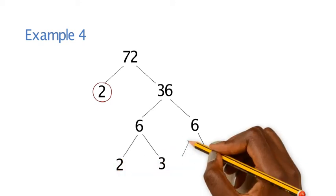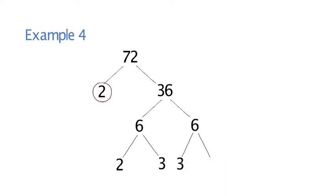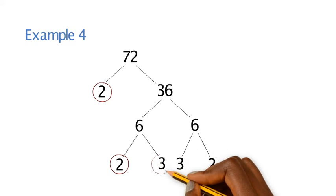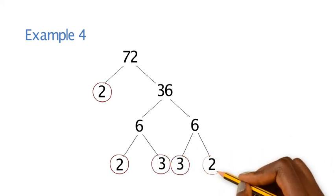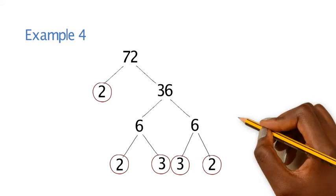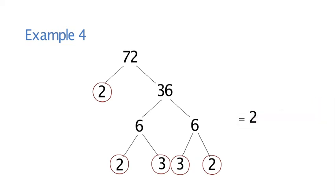Notice that the end of your prime factor trees, they need to be prime numbers. If you circle all those prime numbers just so you don't forget any, your final answer would be 2 cubed because you've got 3 lots of 2 times 3 squared because you've got two 3's.